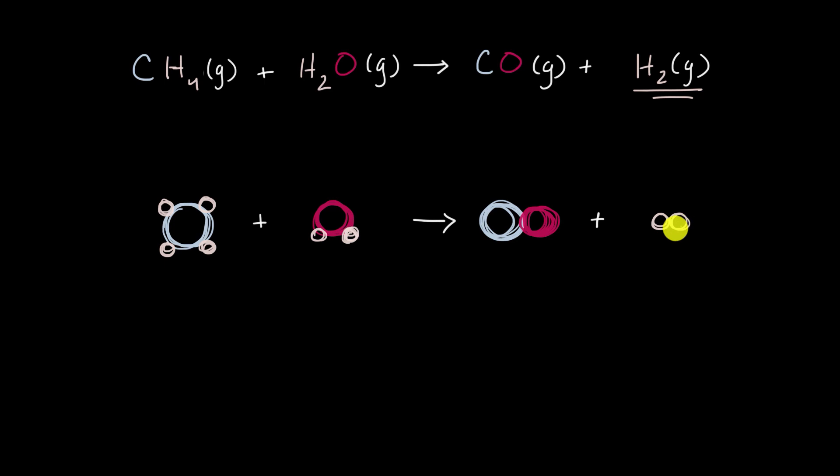They can't just disappear. We have to have conservation of mass. So we need to have another four hydrogens on the right-hand side of this equation. Well, how can we have another four hydrogens?